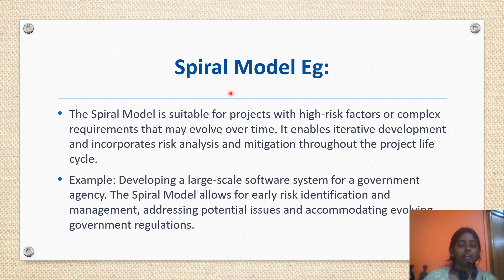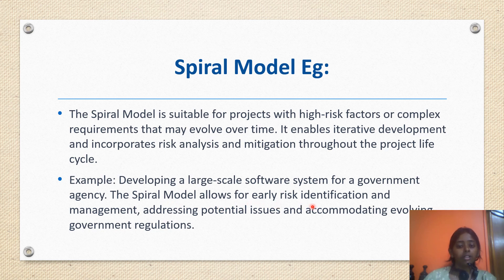Moving to spiral model examples: the spiral model is suitable for projects with high risk factors or complex requirements that may evolve over time. It enables iterative development and incorporates risk analysis and mitigation throughout the project lifecycle. For example, developing a large-scale software system for a government agency — the spiral model allows for early risk identification and management, addressing potential issues and accommodating evolving government regulations.